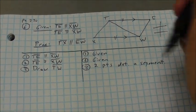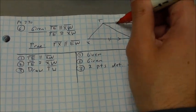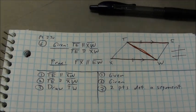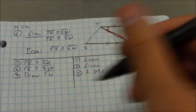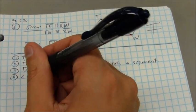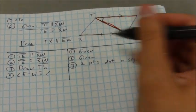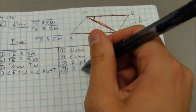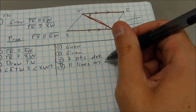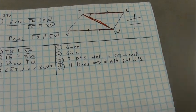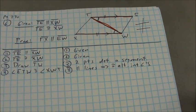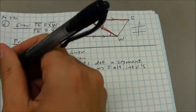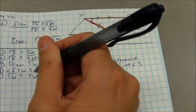Notice that my parallel lines form a Z shape — an upright Z shape. As a result, I have a pair of alternate interior angles that will be congruent. So I can say angle ETW is congruent to angle XWT, because parallel lines imply congruent alternate interior angles. I've now got those two congruent angles and two congruent sides. And I have a shared side: TW is congruent to itself by the reflexive property.